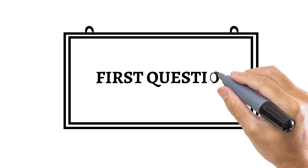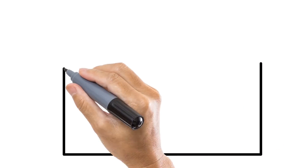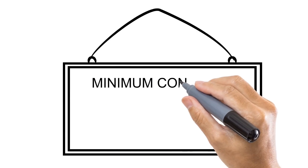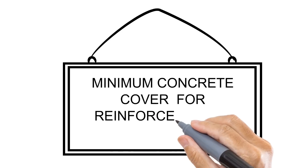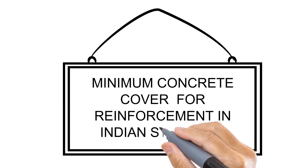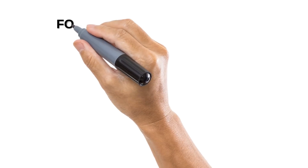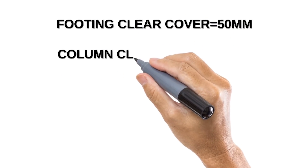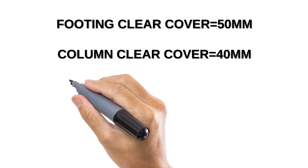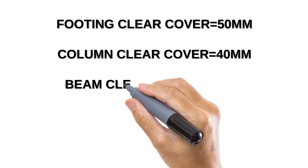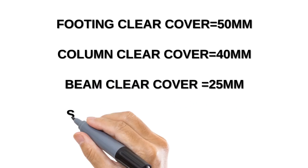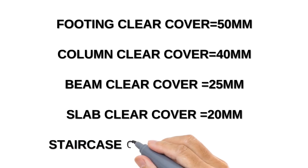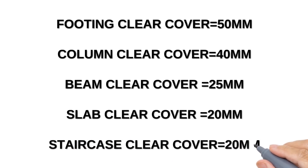First question: Indian standard minimum clear cover. Footing: clear cover 50mm. Column: clear cover 40mm. Beam: clear cover 25mm. Slab: clear cover 20mm. Staircase: clear cover 20mm.